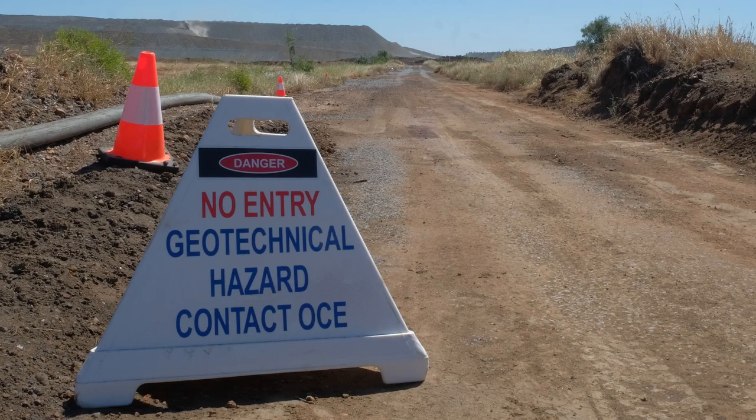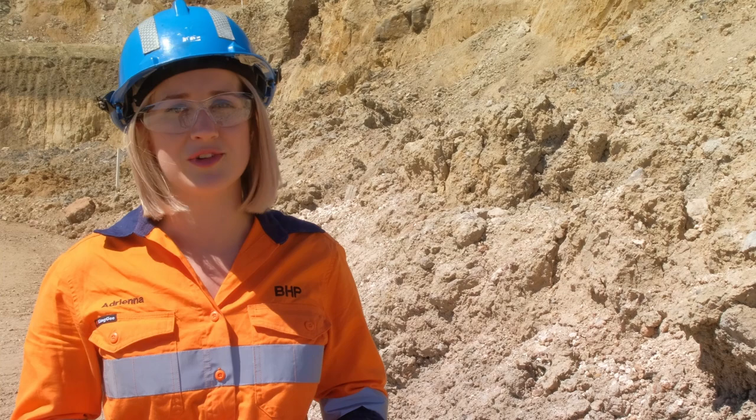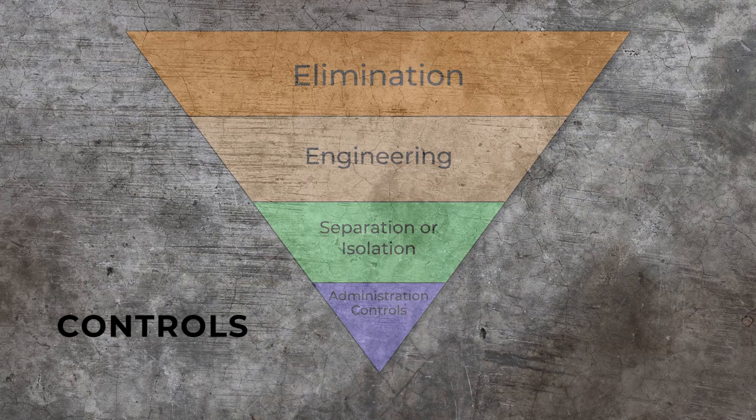Once a geotechnical hazard has been identified, an inspection will be completed as per site requirements. Controls will then be put in place to effectively manage the hazard. Controls must be followed at all times. If you observe conditions to change from those documented in the site hazard report, notify your supervisor immediately.